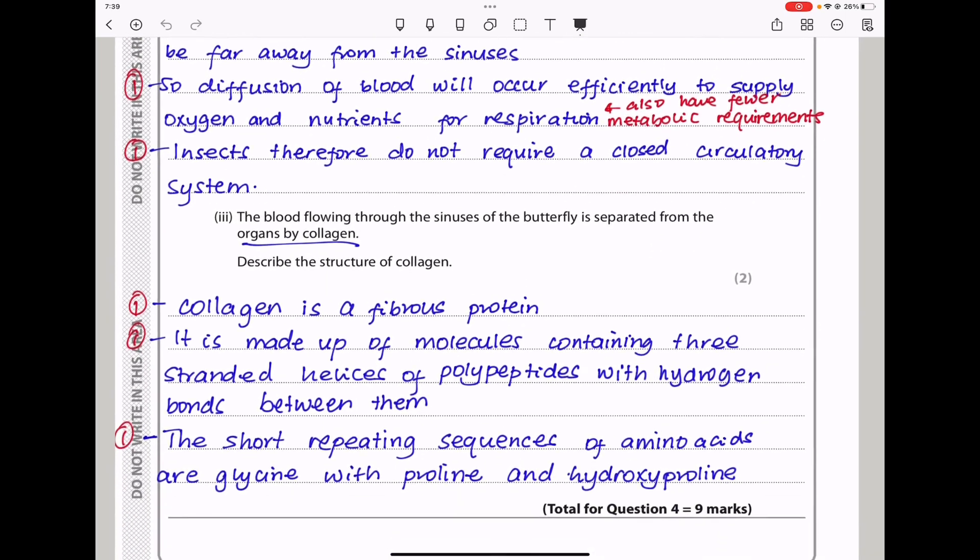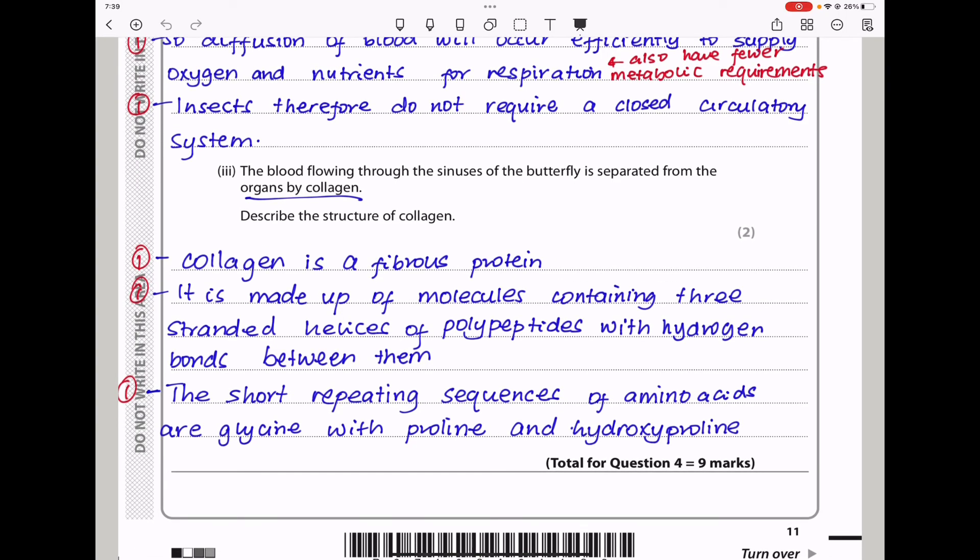Moving on to the last part here, they say the blood flowing through the sinuses of a butterfly is separated from the organs by collagen. Describe the structure of collagen. I said collagen is a fibrous protein. It is made up of molecules containing three stranded helices of polypeptides with hydrogen bonds between them. The short repeating sequences of amino acids are usually glycine with proline and hydroxyproline. So that is very important that you know that.